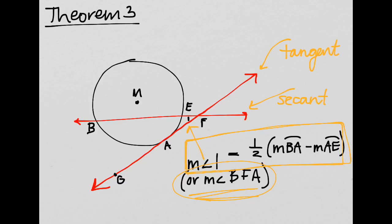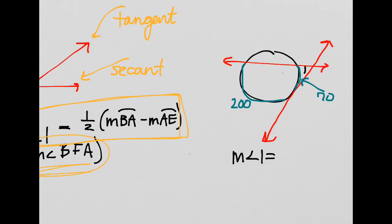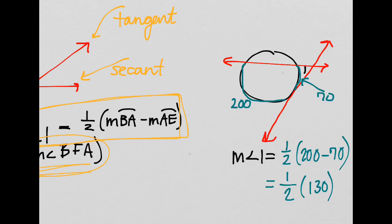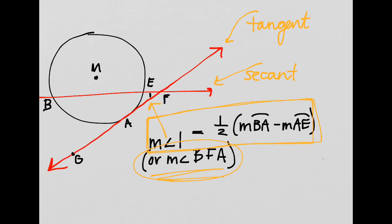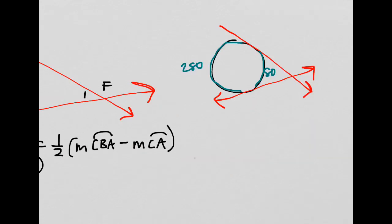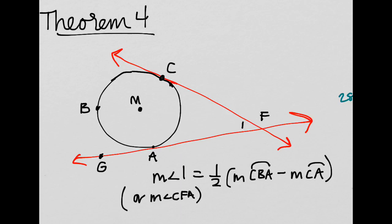Pause the video, draw the picture, write the formula. We need half of the difference — subtract the larger arc minus the smaller arc. So: 200 minus 70 is 130, and then take half of that — 65 degrees is that angle. It intersected on the exterior, so we're still subtracting.